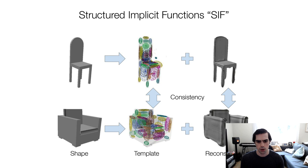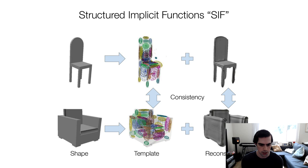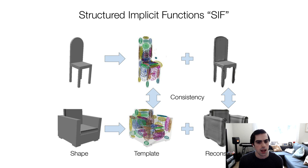Putting that aside for a second, there's been recent work on learning a structured decomposition of space. In this paper, there's a learned structural decomposition that has repeatable shape elements, rendered here as Gaussian ellipsoids that are always in roughly the same location relative to one another, deforming as an unsupervised template space. That's been good for shape analysis, but not so much for shape reconstruction.